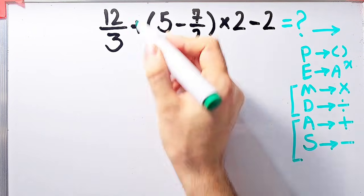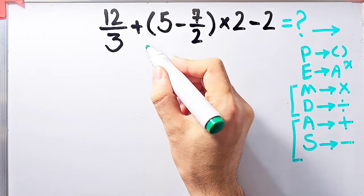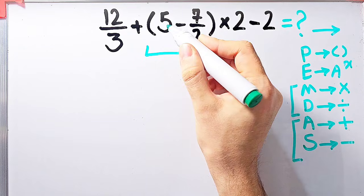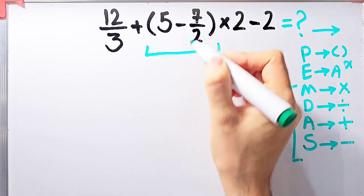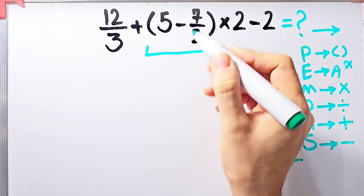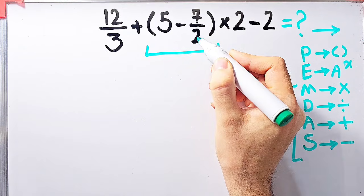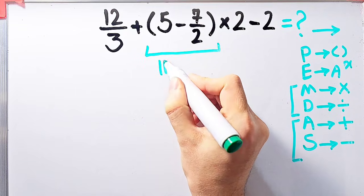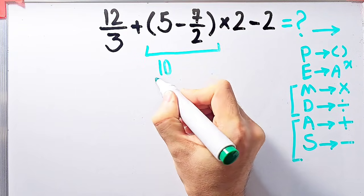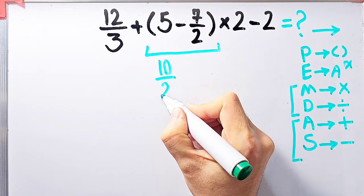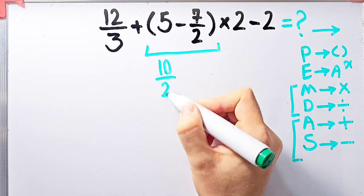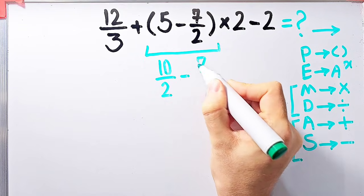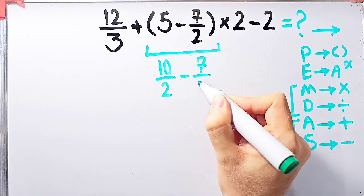According to the PEMDAS rule, first we simplify the parentheses. We have 5 minus 7 over 2. Since the denominator of this fraction is 2, we can write 5 as 10 over 2. Now we have 10 over 2 minus 7 over 2.